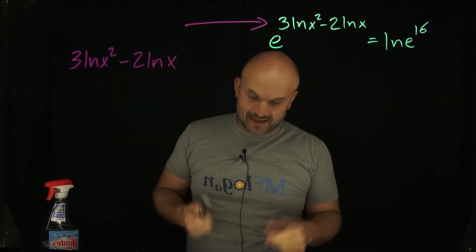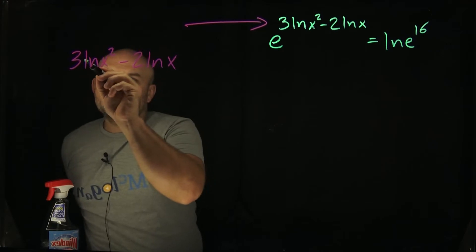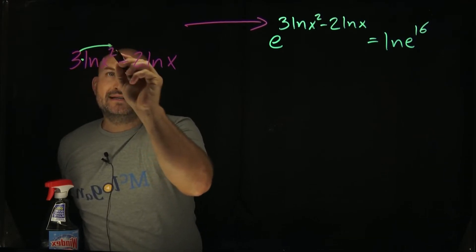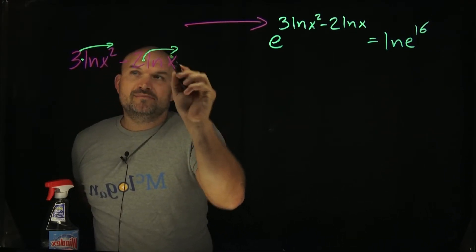So the first thing I recognize is I can apply the power rule. I can take this number in front, this being multiplied, and I can rewrite that as a power of my argument.